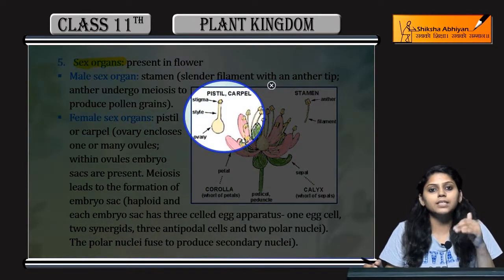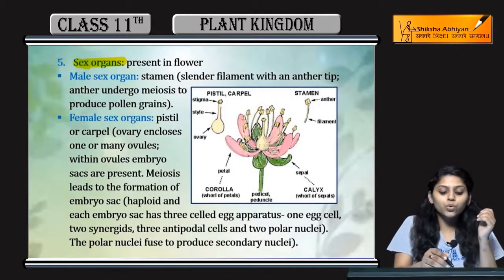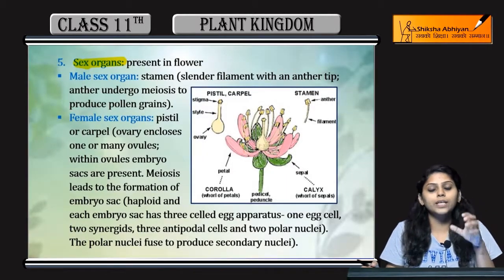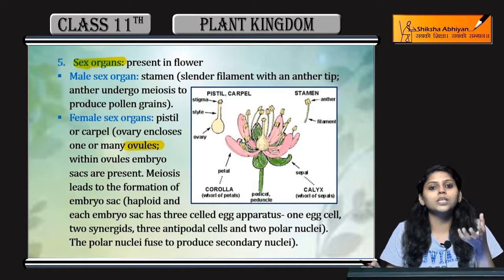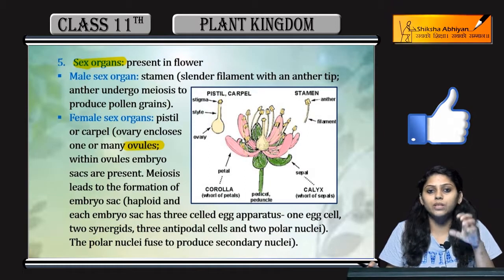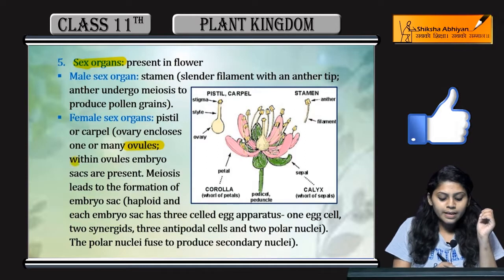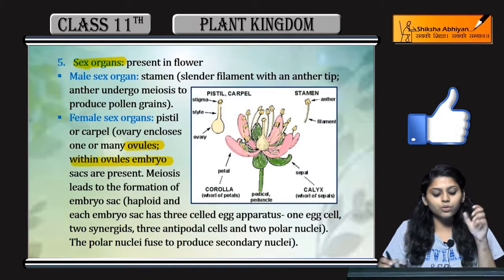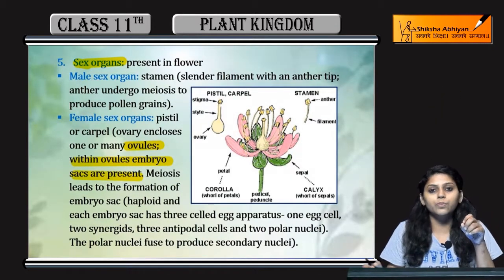Female sex organs are the pistil or carpel, which consist of the stigma, style, and ovary. The ovary contains ovules — there are many ovules present in the ovary. Within the ovules, there is an embryo sac.